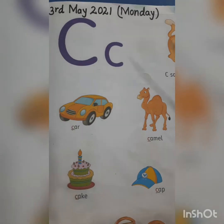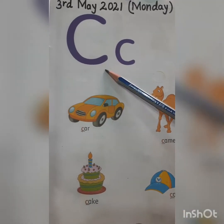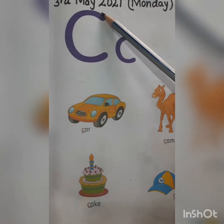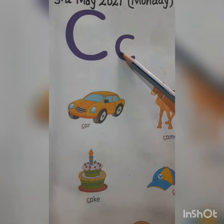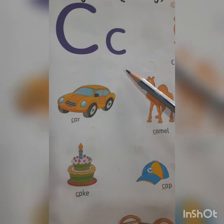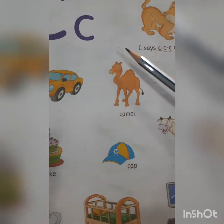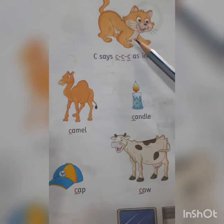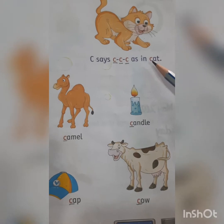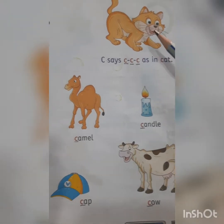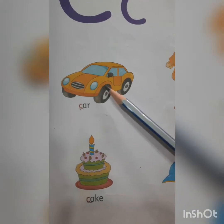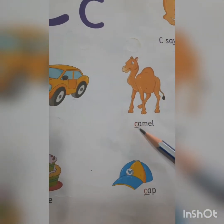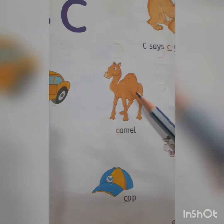Let's see the next letter children. This is letter C. Capital C. This is small c. What is the sound of letter C children? It's 'K' in cat. What is the spelling of cat? C-A-T. Cat. C-A-R. Car. C-A-M-E-L. Camel.